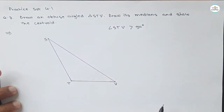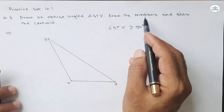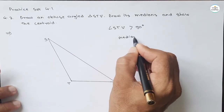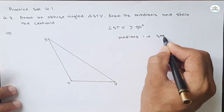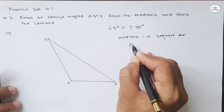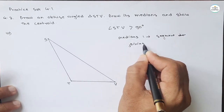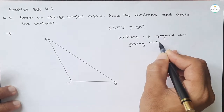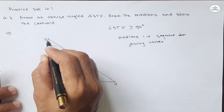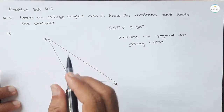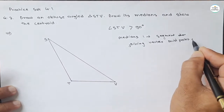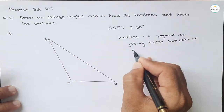Now draw the medians. A median is a segment joining a vertex of a triangle to the midpoint of the opposite side.